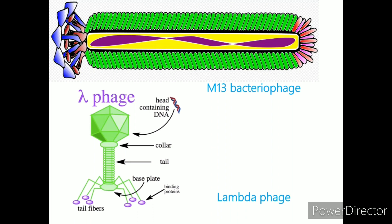M13 is a filamentous bacteriophage composed of circular single-stranded DNA which is 6,407 nucleotides long. The life cycle of M13 is relatively short, with the early phage progeny exiting the cell 10 minutes after infection. M13 is a chronic phage, releasing its progeny without killing the host cells.